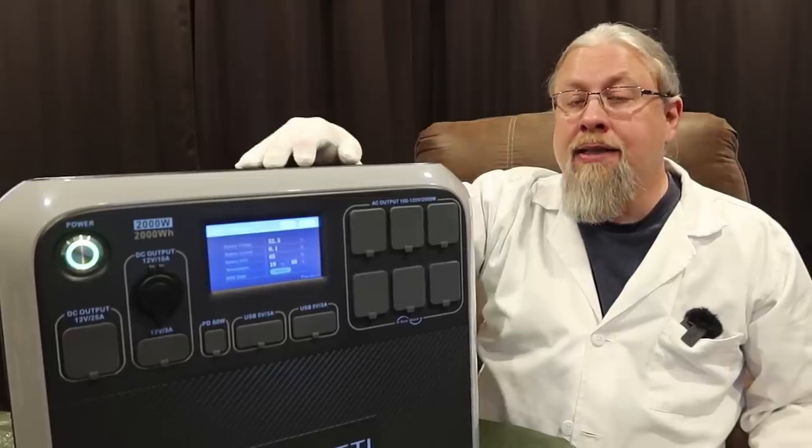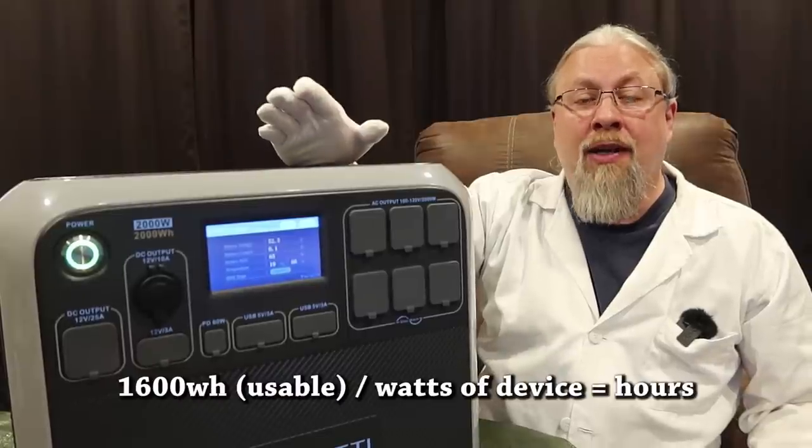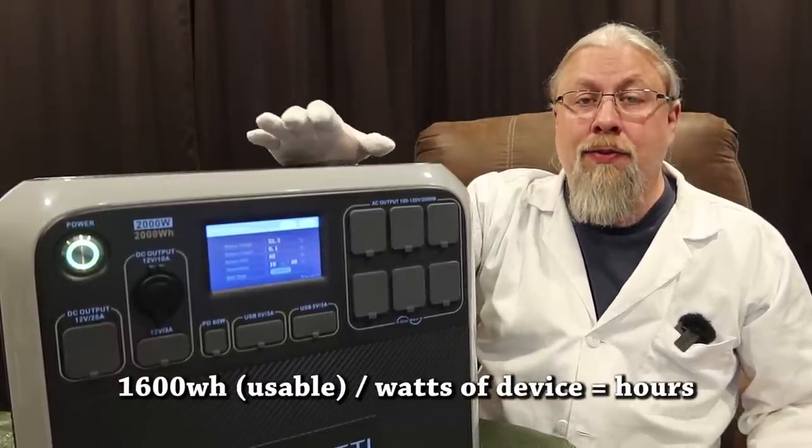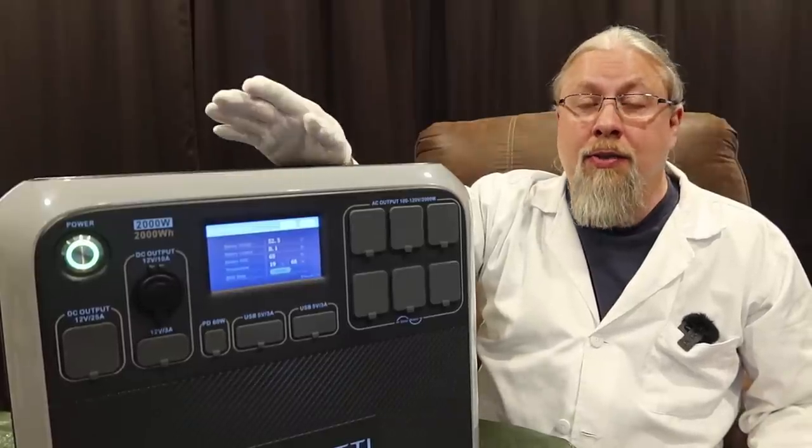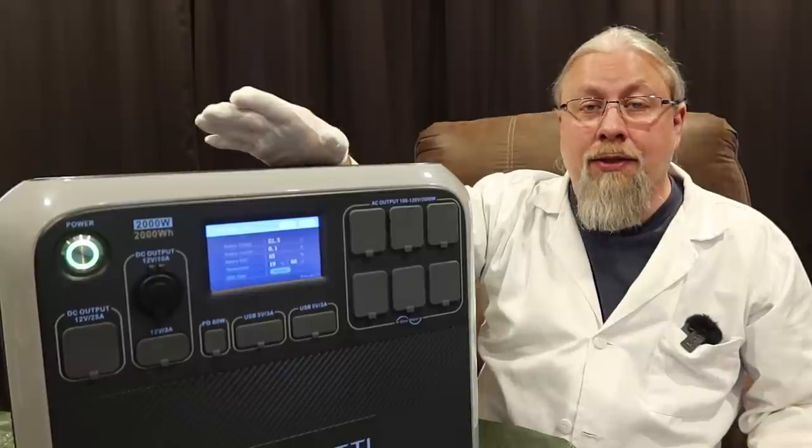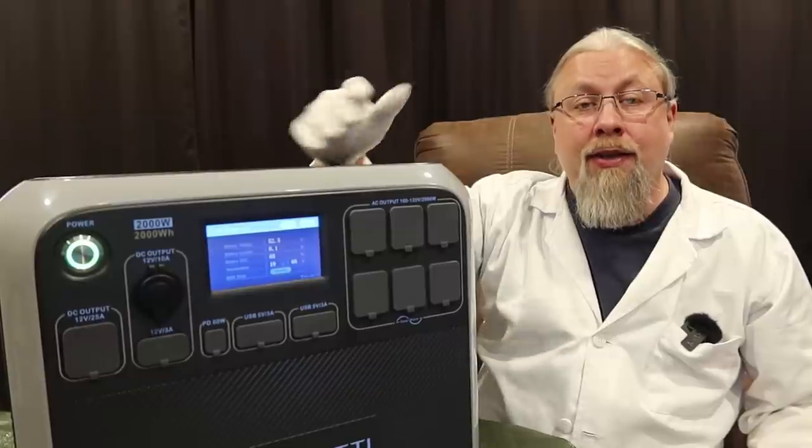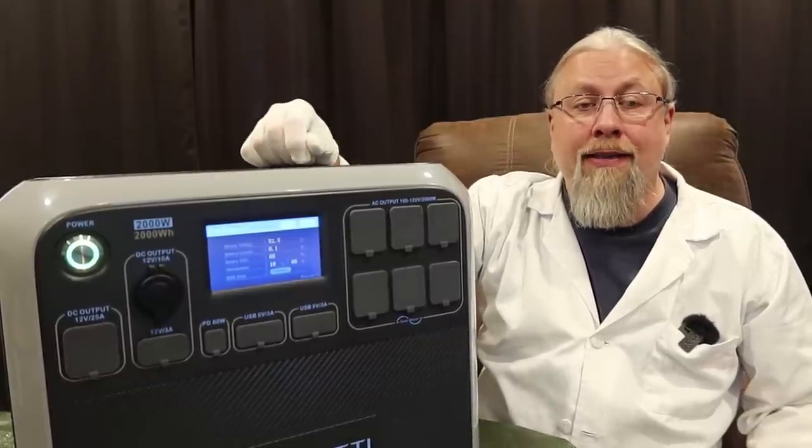And if you want to know how long the AC200P will power your device, use the formula: 1,600-watt-hours divided by the amount of watts that your device consumes, and that'll give you the number of hours it will run. There's no need to ask me in the comments how long your coffee maker, your air conditioner, or anything else will run. Just look on the device. It'll tell you the amount of power it uses, and just use that formula to figure out how many hours you can get off of one of these.